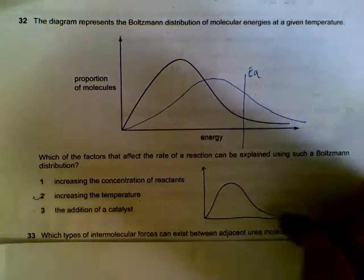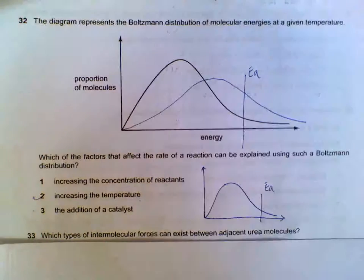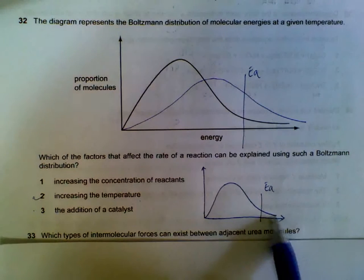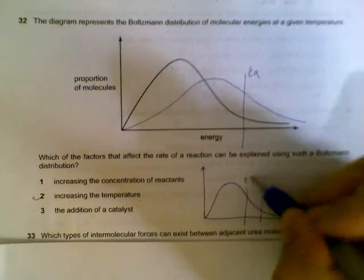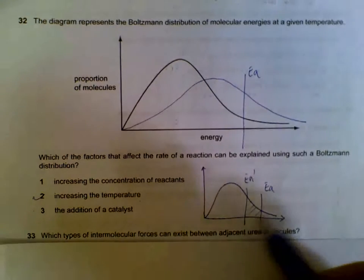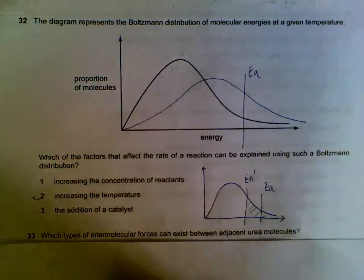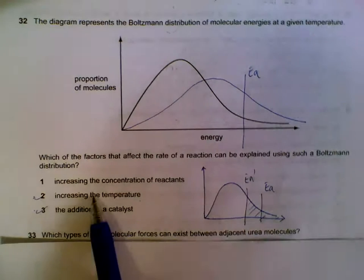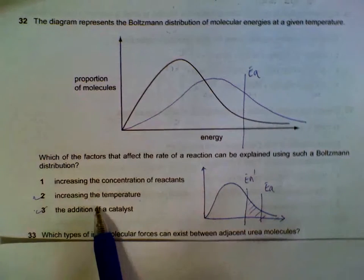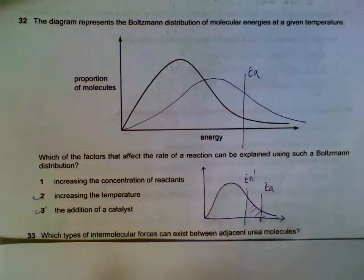A catalyst. Without a catalyst, this is the portion of particles that has the activation energy or more. With a catalyst that lowers the activation energy, we have a much larger portion. So we can use Boltzmann distribution to explain why rate of reaction increases with temperature and addition of catalysts.